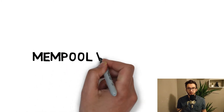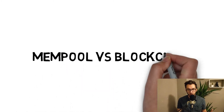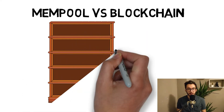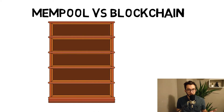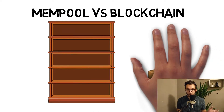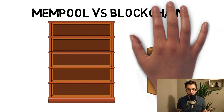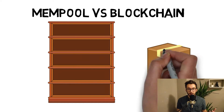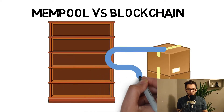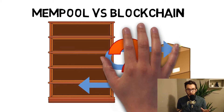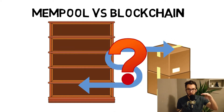How does this differ from a blockchain? The difference is that all transactions first go into the mempool. These are called unconfirmed transactions. Once they are placed inside the box — inside the blockchain — they become confirmed transactions. And more boxes on top make it even more confirmed, giving more confirmations.